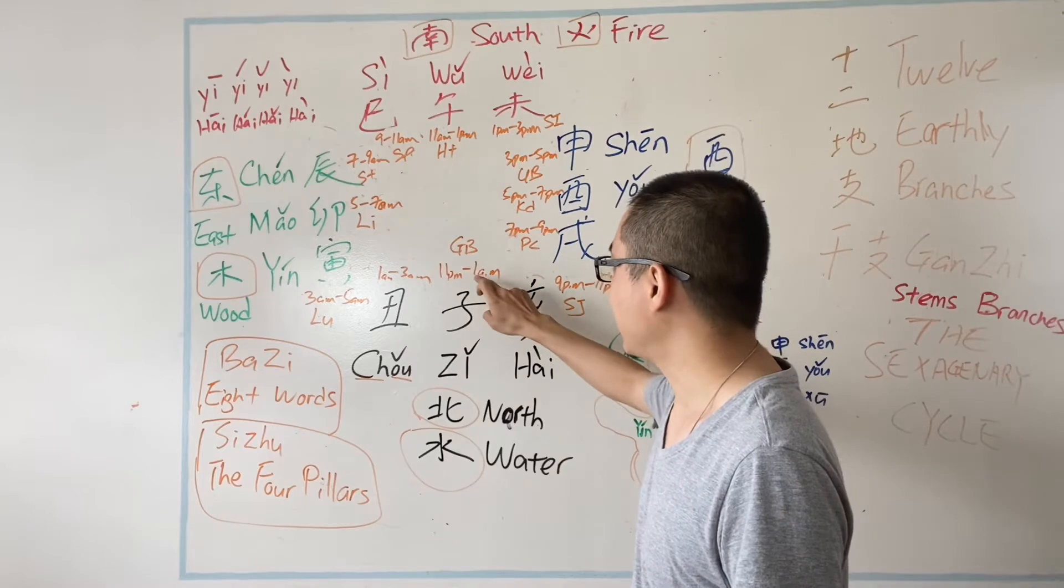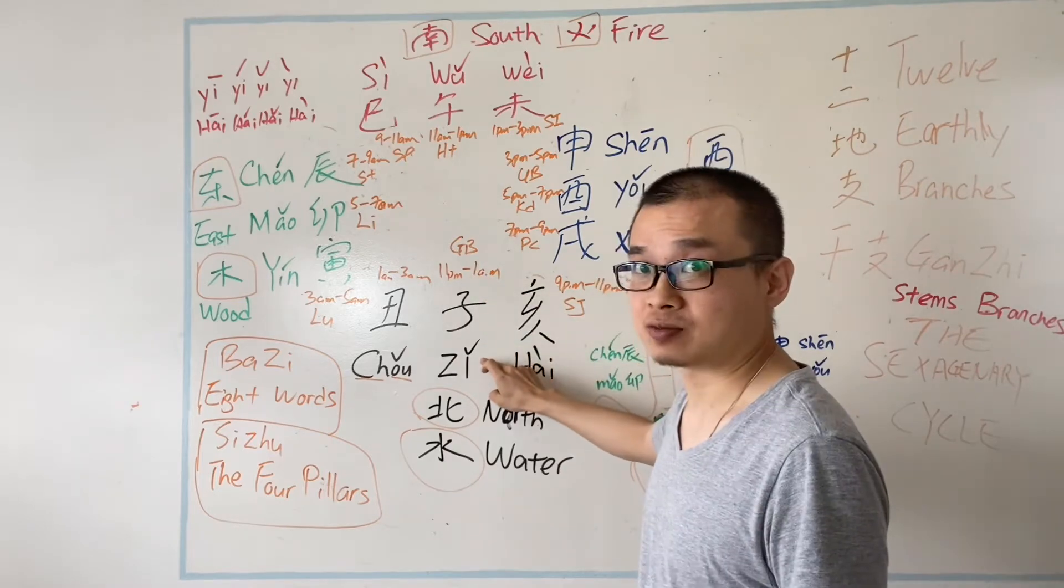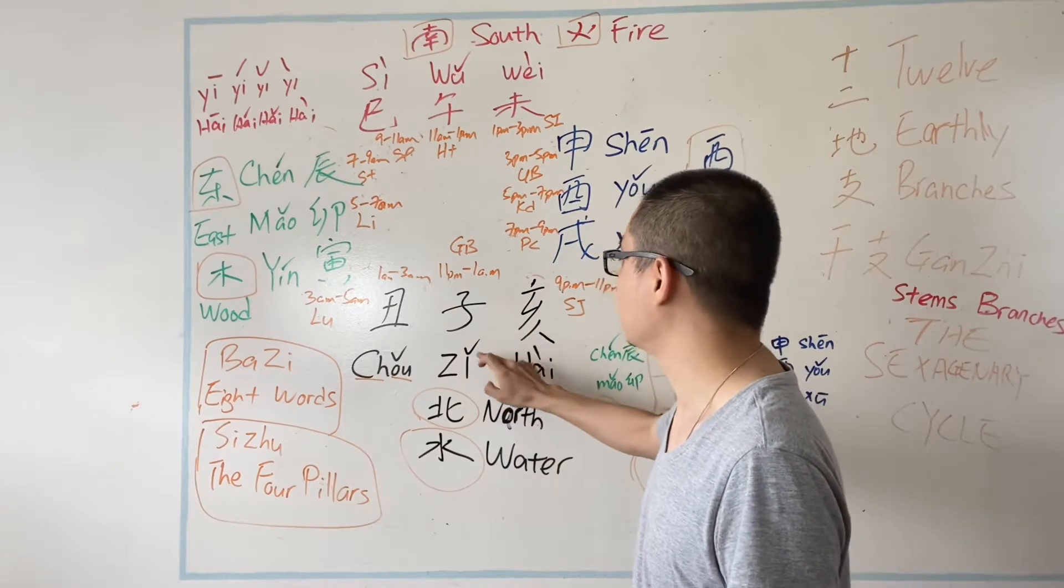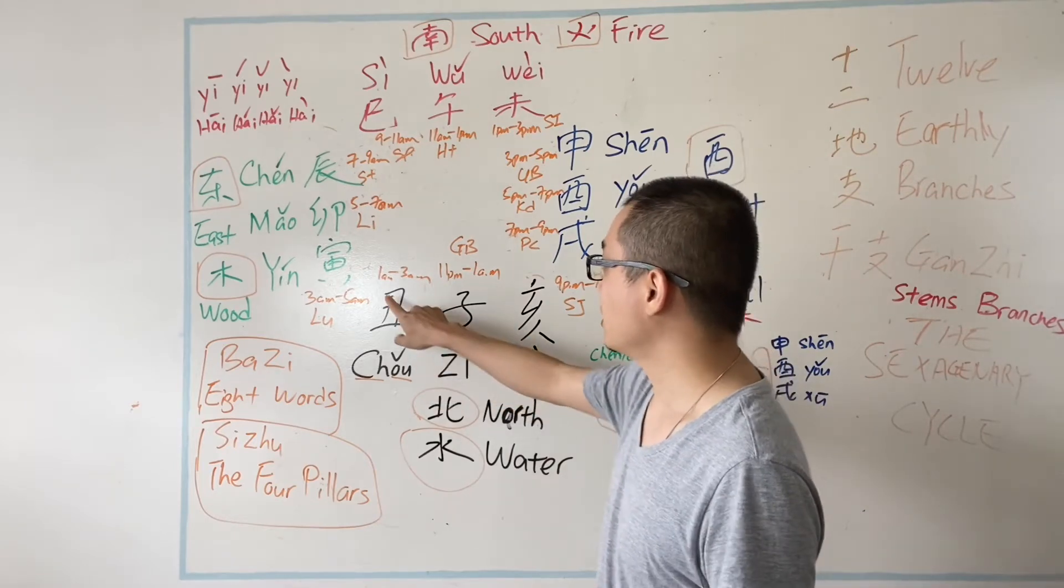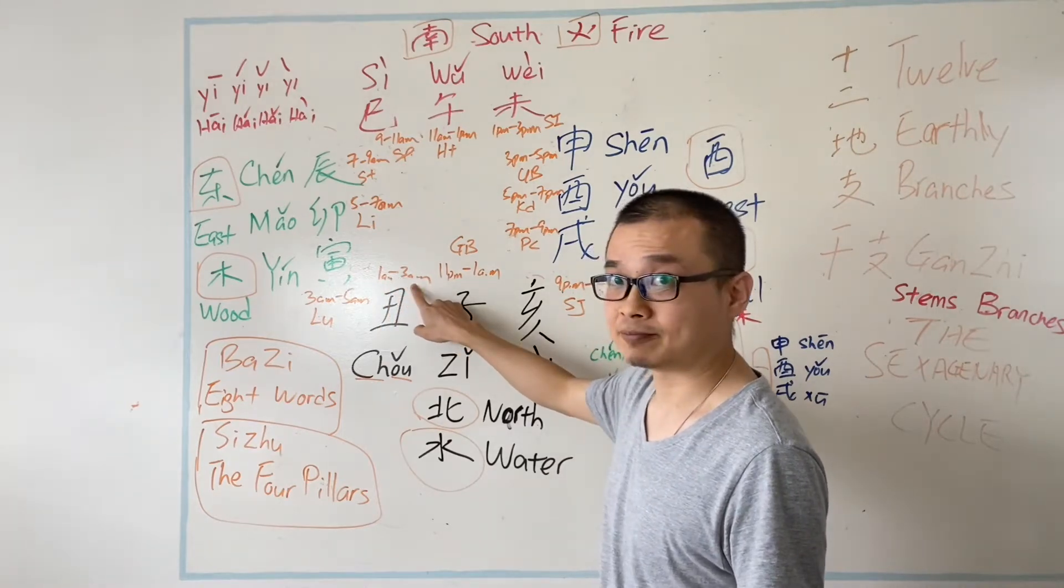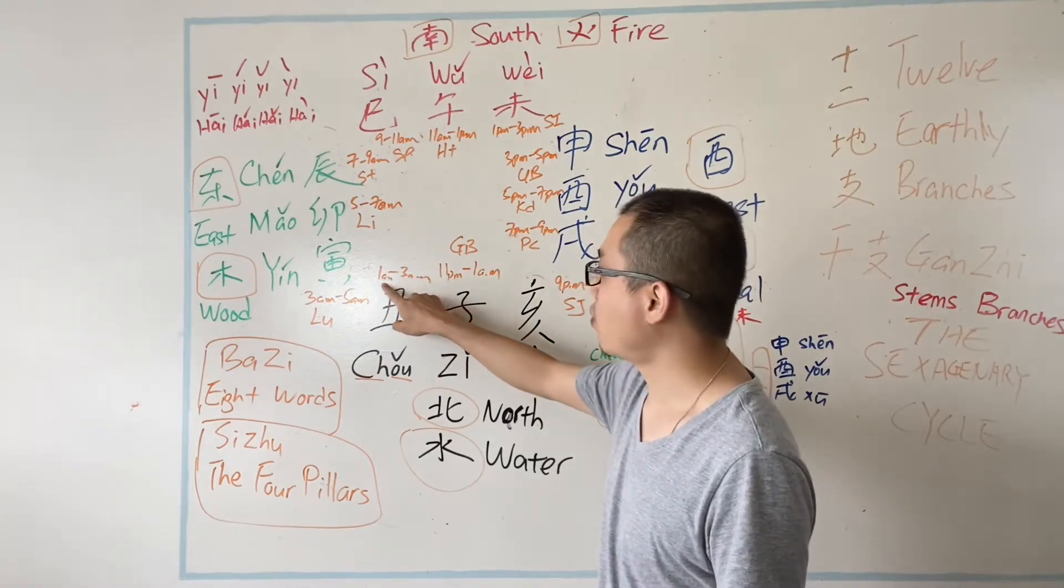And this is 丑时. 丑 time is controlling 1am to 3am.